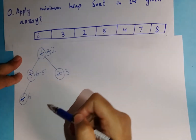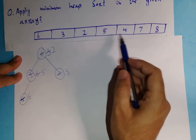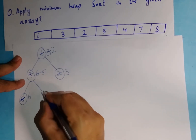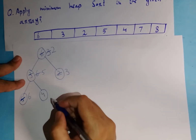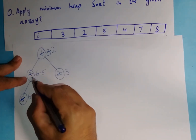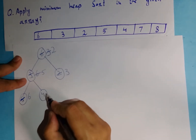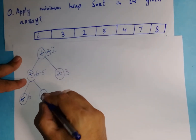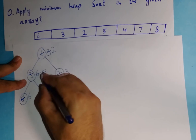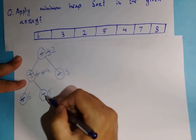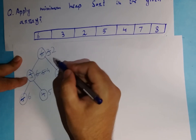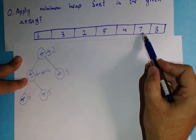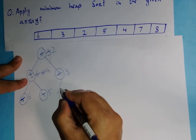Moving back to the array, after 5 the value 4 comes up. I write down 4 and check the condition — 4 is the child node and 5 is the parent node — the child value is smaller, so the condition is false. I swap: 5 goes down and 4 comes up. Now I check the condition again — it is true because 4 is greater than 2.